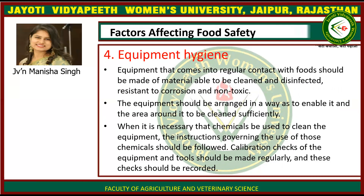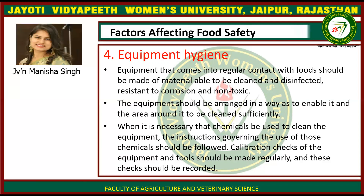The next factor is equipment hygiene. Equipment hygiene is very important as all processing is done by equipment. Equipment that comes into regular contact with foods should be made of material that can be cleaned and disinfected, is resistant to corrosion, and is non-toxic. Equipment should be arranged to allow it and the surrounding area to be cleaned sufficiently. When chemicals are used to clean equipment, the instructions governing their use should be followed. Calibration checks of equipment and tools should be made regularly and recorded.